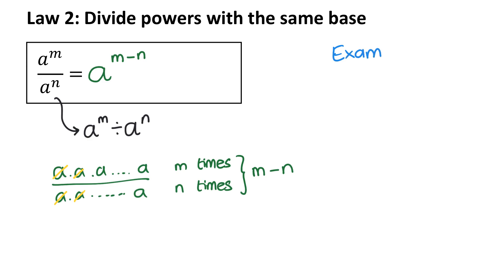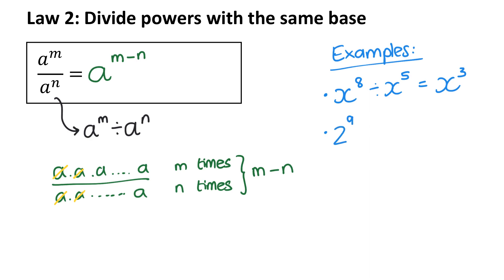Let's look at some examples. If I had x to the power of 8 divided by x to the power of 5, I subtract the exponents and get x to the power of 3. Or with a numerical base: 2 to the power of 9 divided by 2. Something without an exponent has an exponent of 1, so 9 minus 1 is 8, giving 2 to the power of 8. When dividing, even if the base is a constant, I still subtract the exponents and keep the same base.